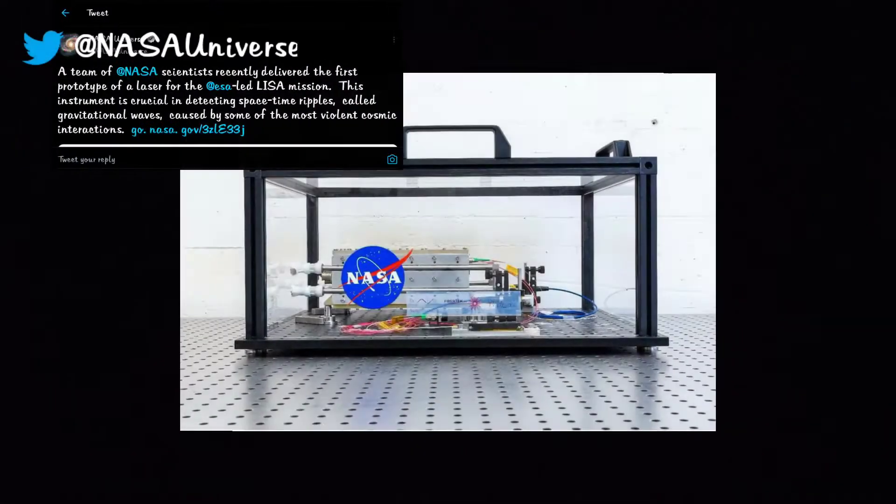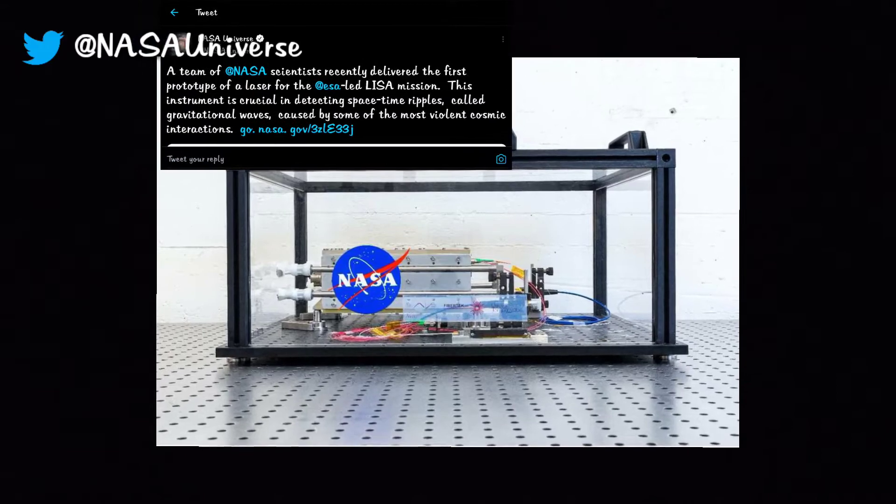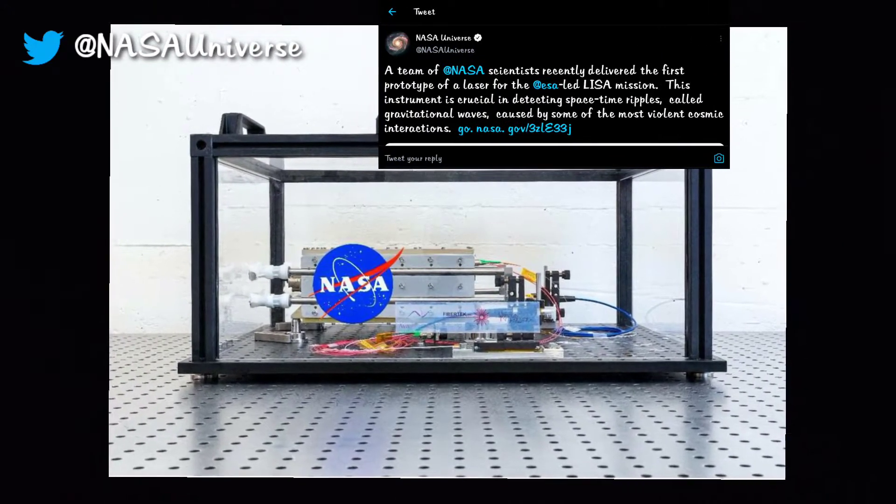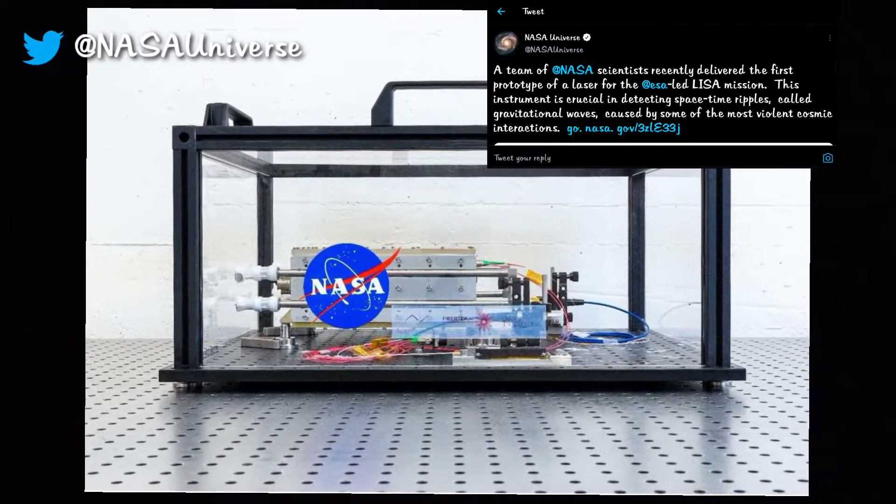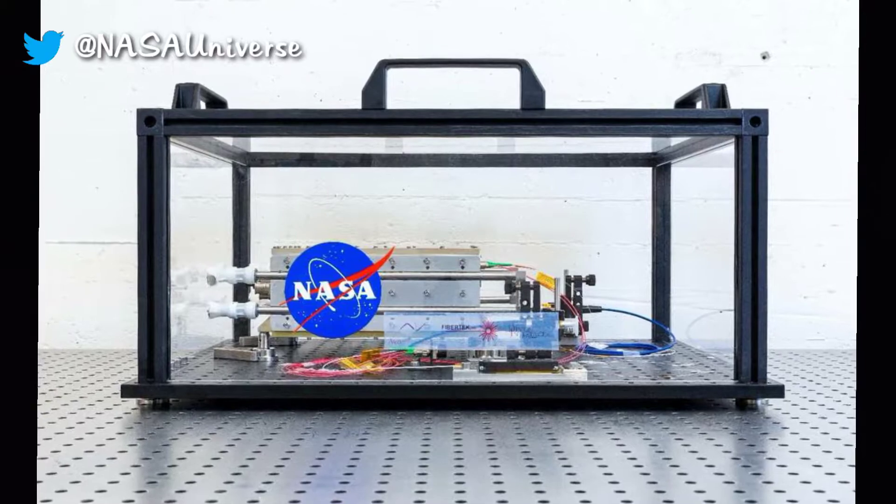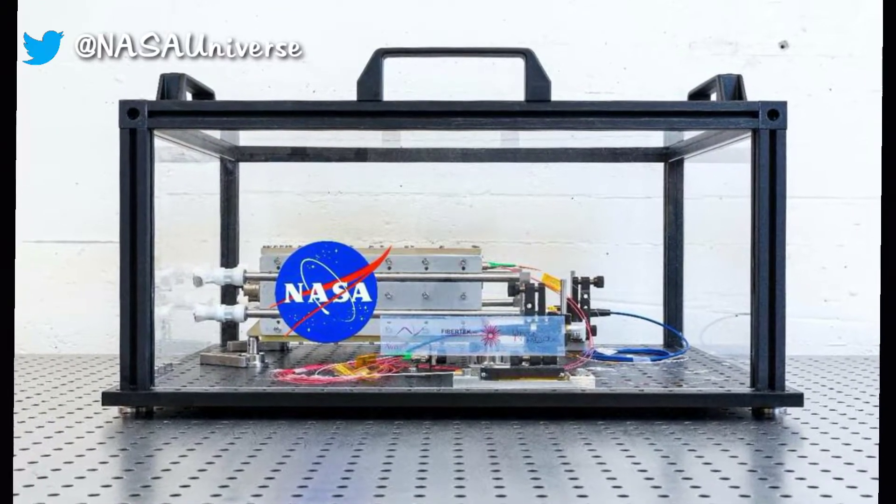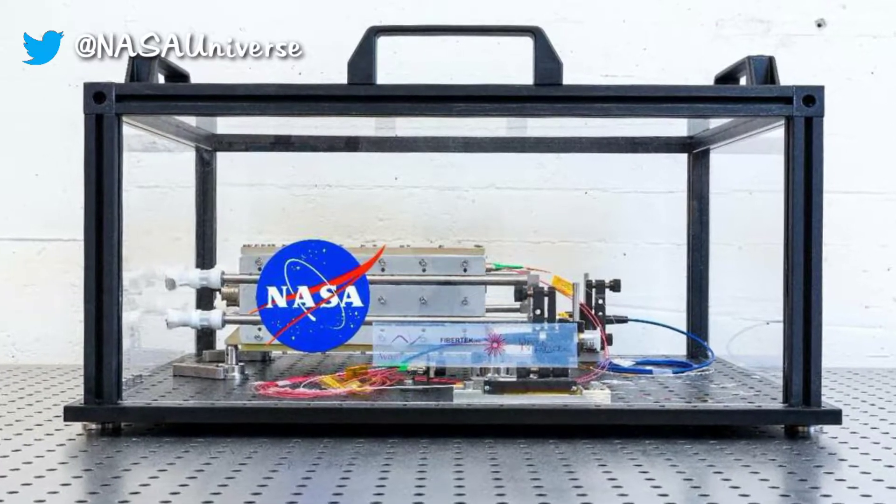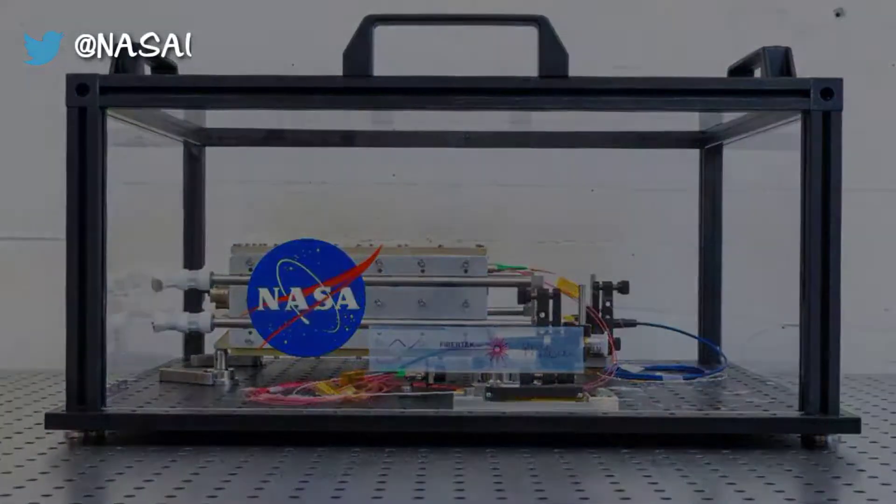If you already know LISA, you are awesome. Laser Interferometer Space Antenna, or LISA, is the space equivalent of LIGO and Virgo observatories used for detecting gravitational waves. LISA can detect very fine gravitational waves with much more accuracy and precision. The prototype laser for this mission was delivered to the Swiss Center for Electronics and Microtechnology for testing purposes.